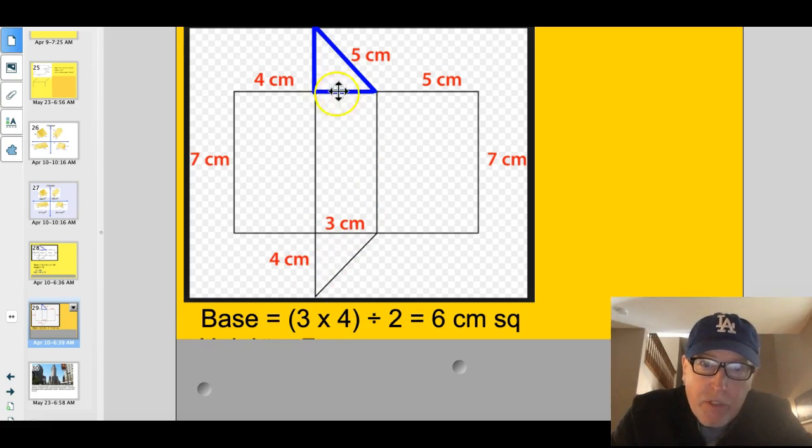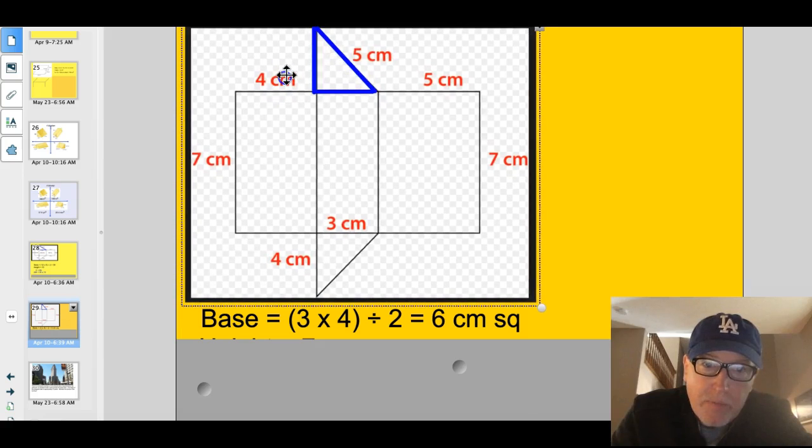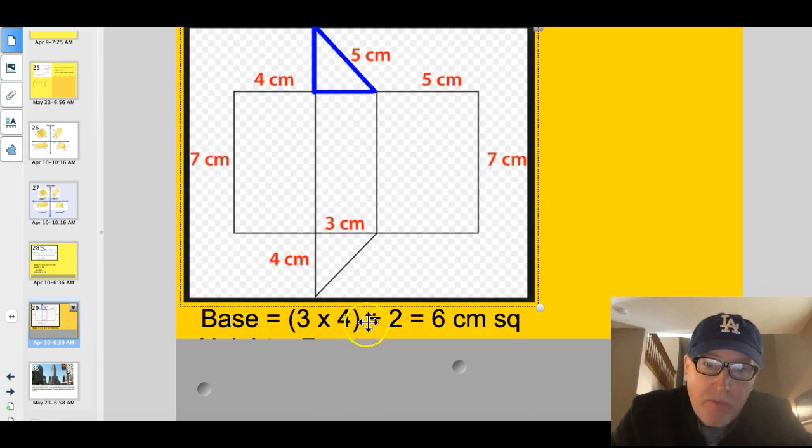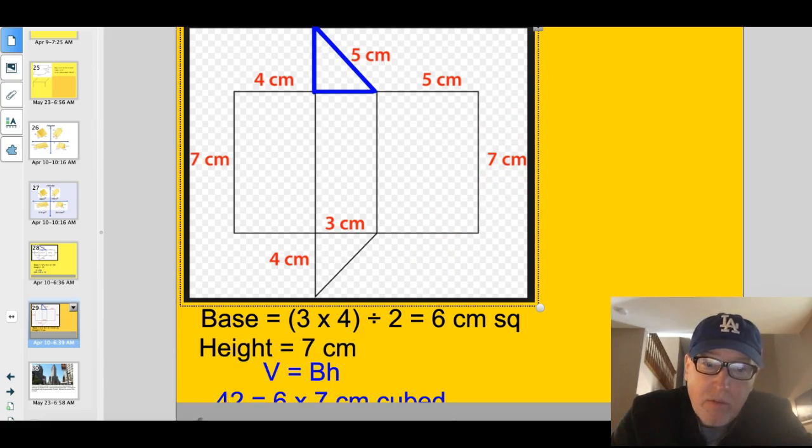So, let's take a look at our work here. We have this 3 here times the height of 4. See, the height over here is 4. This one should be moved up a little bit. Base times height. 3 times 4 divided by 2. 3 times 4 is 12. Divided by 2 is going to give me 6 centimeters squared. The height is 7. Big base times height. So, 42 is equal to 6 times 7. Very good.